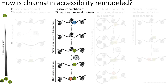Another approach is passive competition of transcription factors with architectural proteins. Certain subsets of proteins that are not nucleosomes tend to associate with chromatin in a transient way. These architectural proteins typically aren't fixed on the chromatin. When they get released, that gives other transcription factors an opportunity to come in, and with the help of chromatin remodelers, recruit secondary factors to then bind the region and initiate transcription.